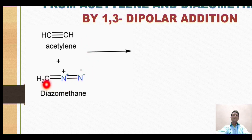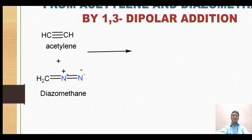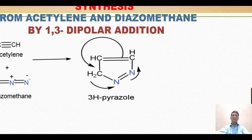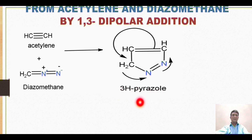This 1,3-dipolar addition takes place on the acetylene. The positively charged CH2 carbon attacks the carbon of acetylene in an electrophilic addition, forming a bond between the two carbons. As this bond forms, the electrons of the triple bond shift to the other carbon, which then acquires a positive charge and forms a bond with the negatively charged nitrogen. This dipolar addition gives an intermediate in which the two nitrogens are bonded to each other, yielding a 3H-pyrazole.